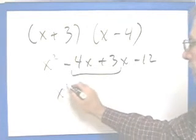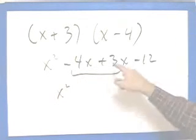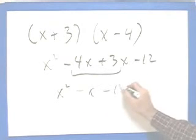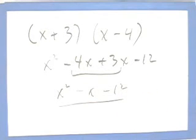Again, we combine those middle terms. Minus 4x plus 3x leaves you minus x minus 12. Now, and here's our final answer.